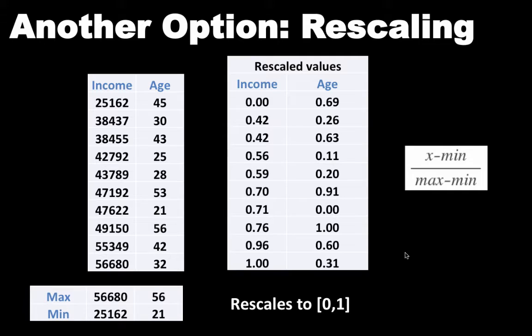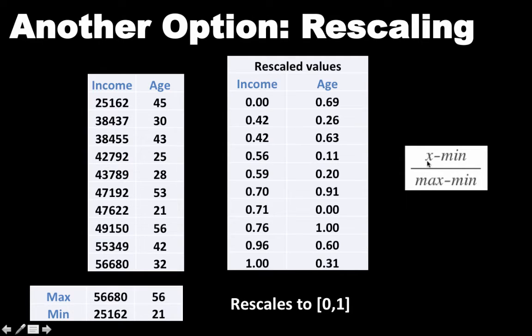Another option is what we might call rescaling. We've got incomes and ages which are pretty incommensurate — incomes are so much higher than the ages. But what if we rescale the values so that the minimum income becomes 0, the maximum income becomes 1, and all the values in between are appropriately scaled? Similarly, we do the same thing for age. The minimum age becomes 0, the maximum age becomes 1, and every value in between is appropriately scaled. You can do that by taking for every value x: x minus min, where min is the minimum value of the attribute, divided by max minus min, which is the complete range for that attribute. If you do that, then all the values will become between 0 and 1, with 0 being the least and 1 being the most.